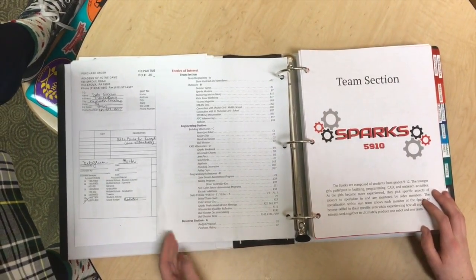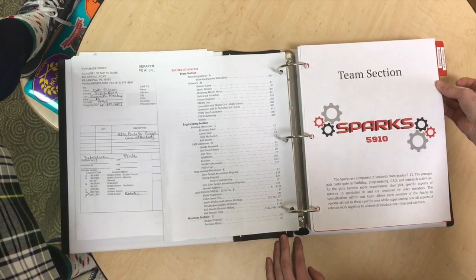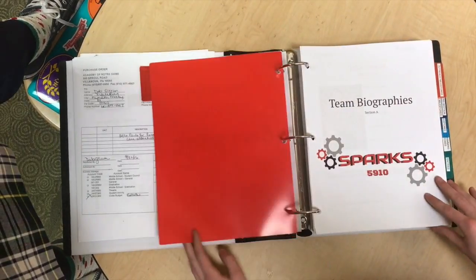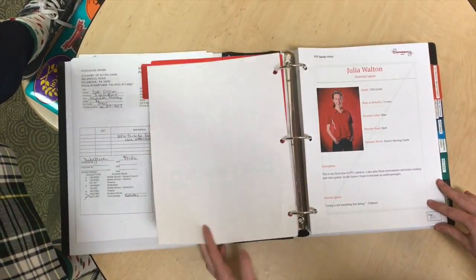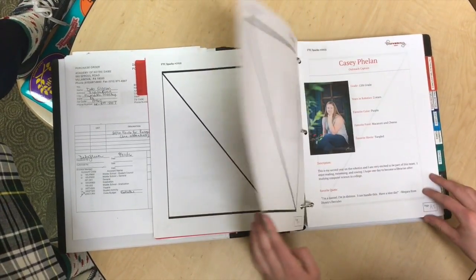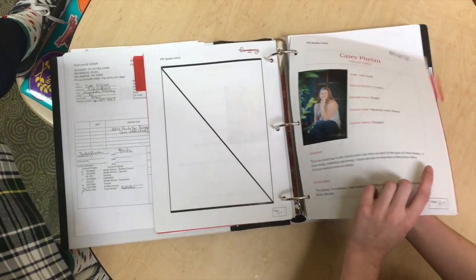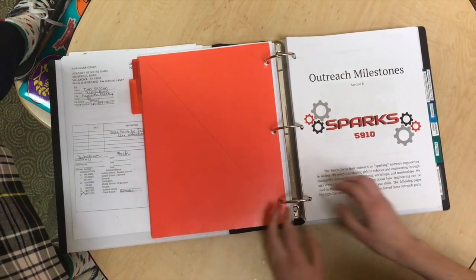The rest of the notebook is divided into sections. The first is the team section. In our notebook, here we include biographies of each of our team members, including their name, their grade, how long they've been in FTC, their favorite color, their favorite food, things like that. We also write down who are our captains and who are our newer members.